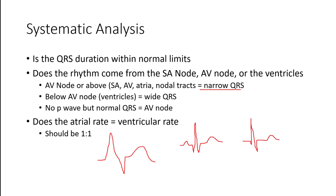If there is a P wave, it probably started in the SA node. If it's narrow but there is no P wave, it started somewhere above the ventricles — we call it supraventricular — but if there's no P wave, we can't say it's sinus or starting in the SA node. The atrial rate should match the ventricles — one-to-one, P wave to ventricle.